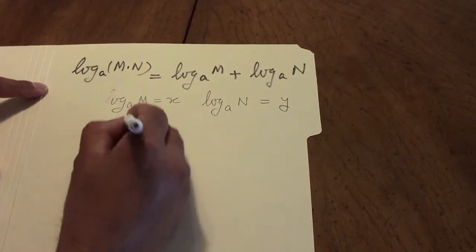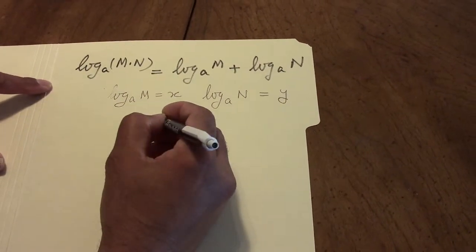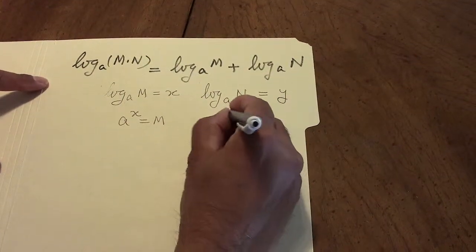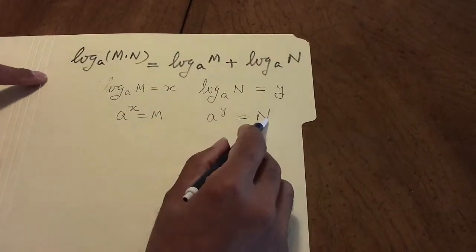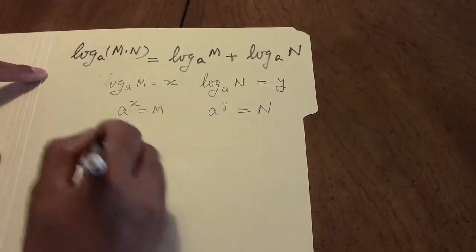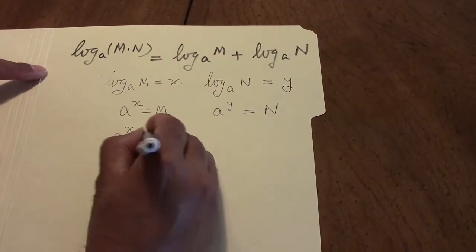Writing it as an exponential, a to the power of y is n. Then let's multiply these two equations, so we get a to the power of x times a to the power of y is m times n.